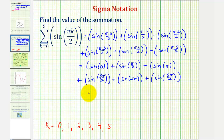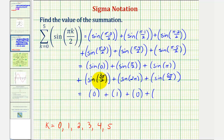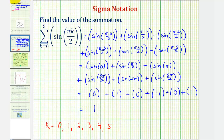So using the unit circle or the graph of the basic sine function, we have: zero plus one plus zero plus negative one plus zero plus one. The sum is positive one, which means the value of the summation is positive one.